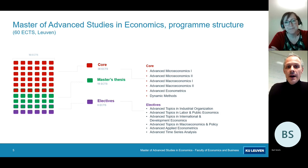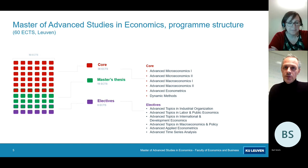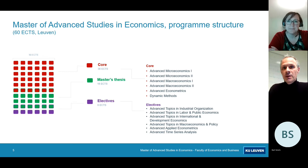On top of that, there are two methods courses. One is Advanced Econometrics, where you will cover panel data, discrete choice models, and time series econometrics — the frontier econometrics methods. The last course in the core is Dynamic Methods, which will be a mix between economic theory and econometrics, focusing on dynamic models in economics — both individual decision-making models and macroeconomic models. This course consists of both theory and hands-on experience in empirical methods.